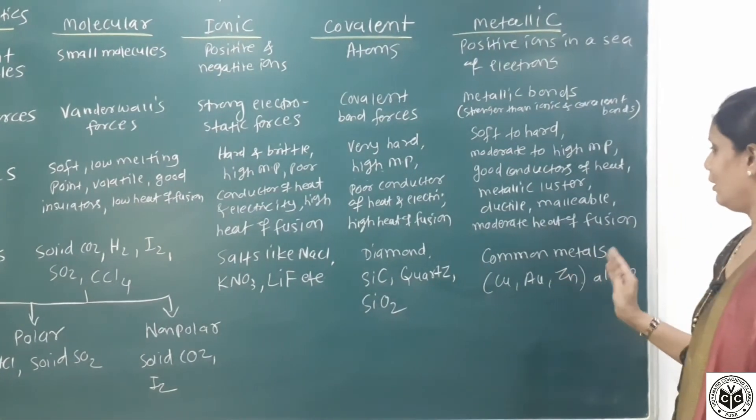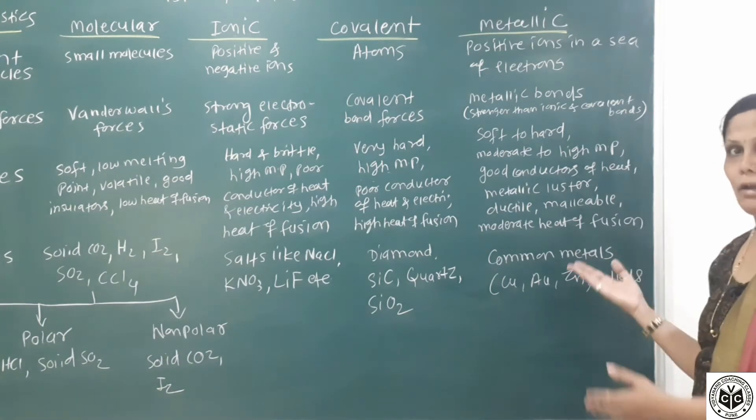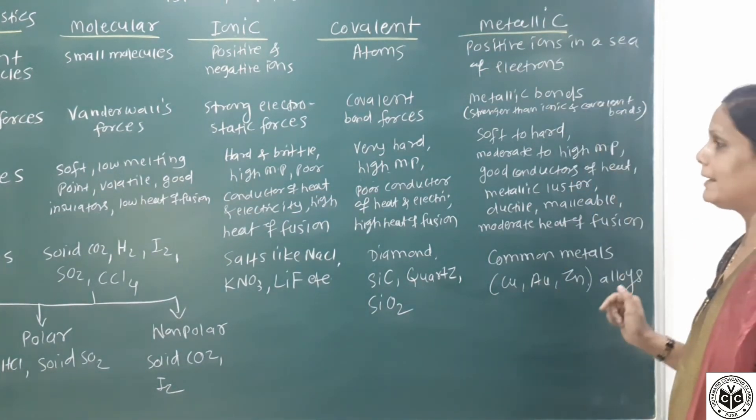And metallic solids: all common metals like copper, gold, zinc, iron, and alloys. Those are examples of metallic solids.